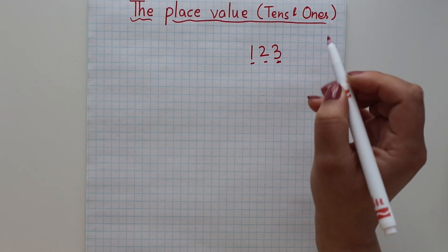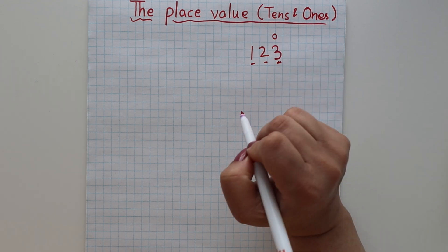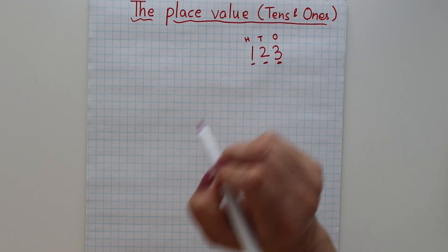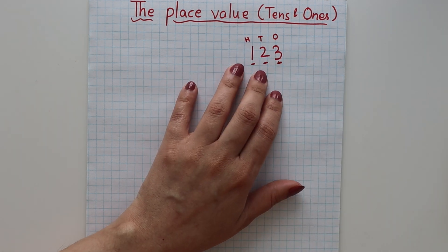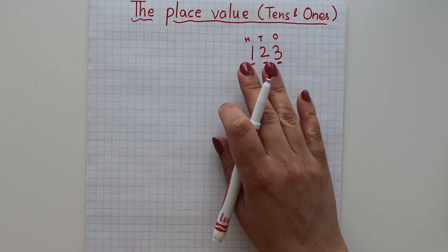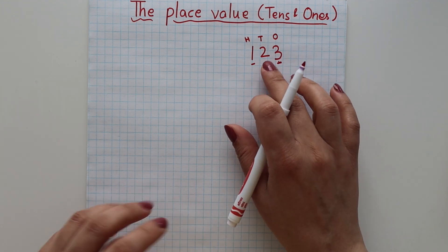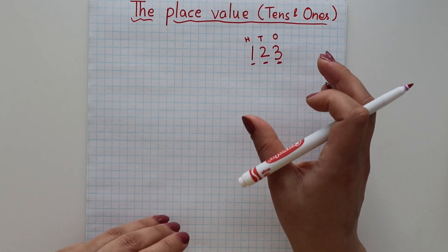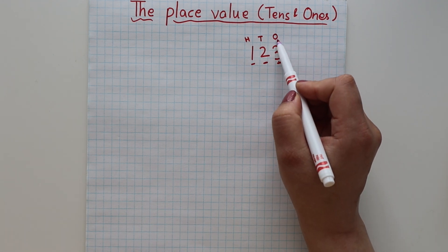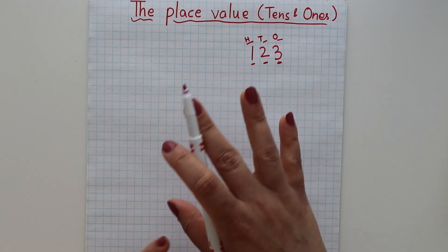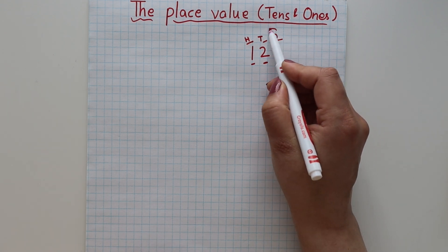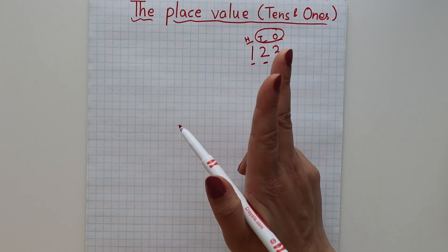So this digit 3 is at the ones place, 2 is at the tens place, and 1 is at the hundreds place. That is what place value means — the value of a digit in a number. In a 3-digit number, every individual digit has a place value. We represent the value of ones, tens, hundreds, and thousands. But you don't need to go that far — start with just ones and tens, meaning 2-digit numbers.